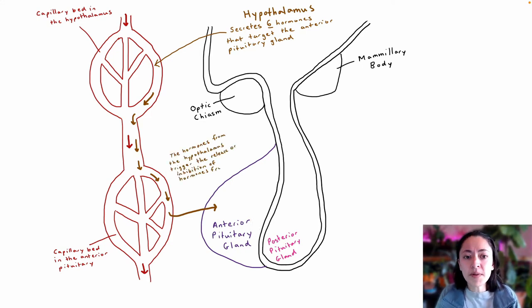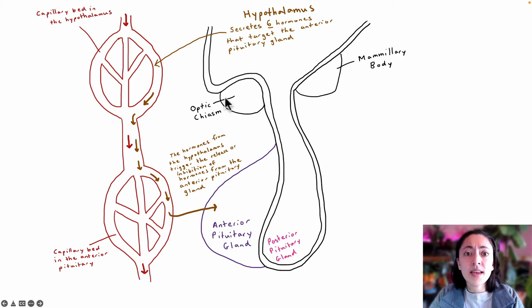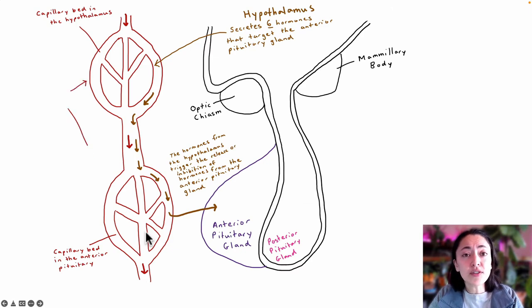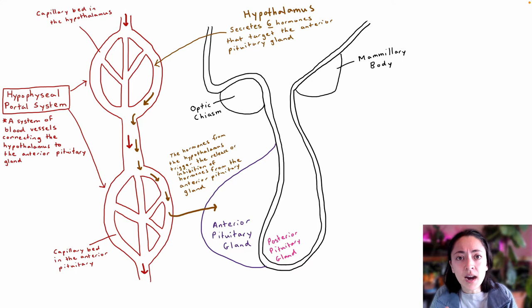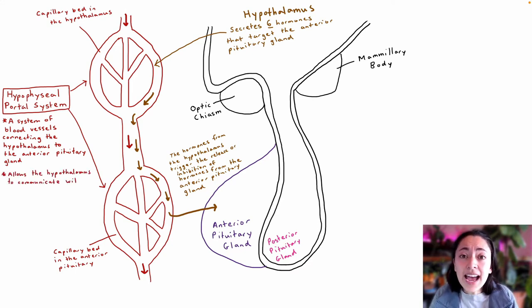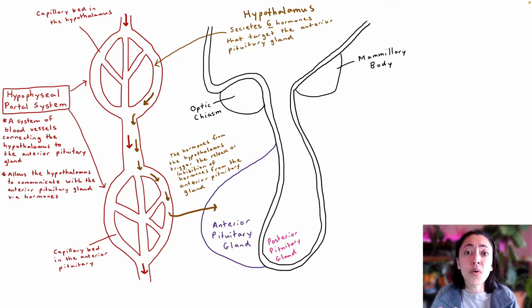The hormones from the hypothalamus trigger the release or inhibition of hormones from the anterior pituitary gland. This system of blood vessels connecting the hypothalamus to the anterior pituitary gland is known as the hypophysial portal system. It allows the hypothalamus to communicate with the anterior pituitary gland through hormones.